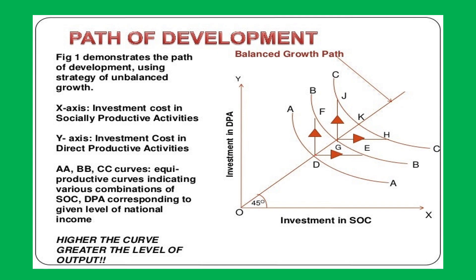Here we invest in DPA, which is the investment DF. Then, if you want to invest in SOC, that induces SOC investment. The balance point is GJ, then GL is the investment in DPA up to point J, and we balance at K. So the DPA-first path is D, F, G, J, K, and the SOC-first path is D, E, G, H, K.